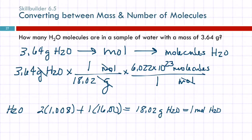3.64 divided by 18.02 times Avogadro's number. And again, this is going to end up with three significant figures. 1.2164 times 10 to the 23rd. And when I round that, I get 1.22 times 10 to the 23rd atoms.